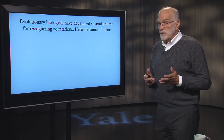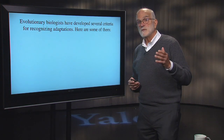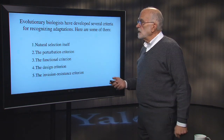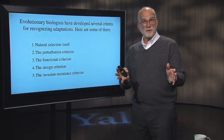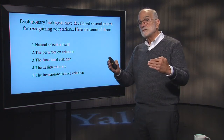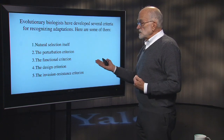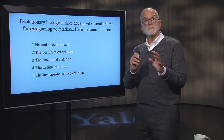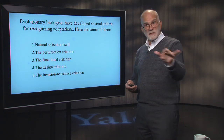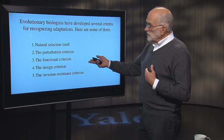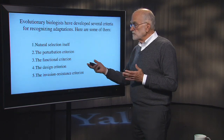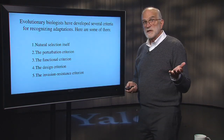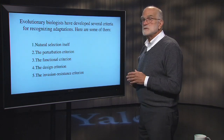Evolutionary biologists have been worried about this problem, and they have developed a set of criteria by which one can recognize an adaptation. The first is natural selection itself — you actually observe the process. Second, you perturb the state of the organism and demonstrate that the state it's in has more reproductive success than the alternatives. Third, there is a functional definition. Fourth, there is a design definition. And fifth, there is an invasion resistance way of recognizing adaptation.